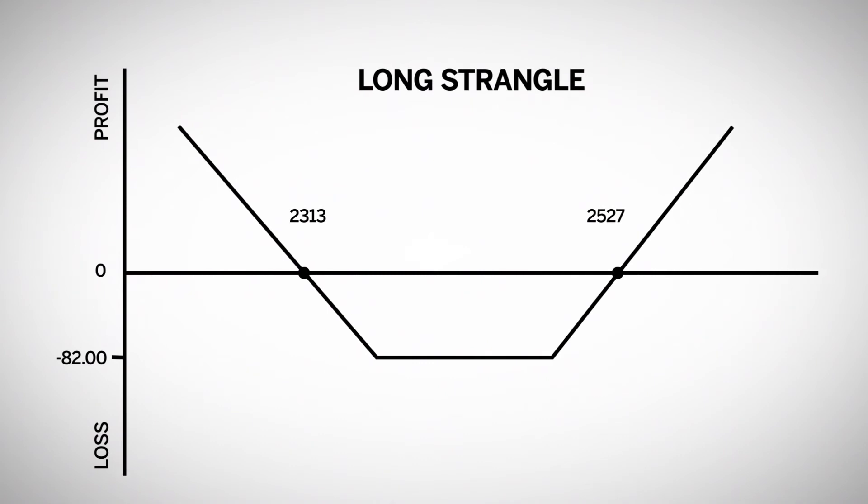For example, at expiration, the break-even points are 23.13 and 25.27. These are the call strike plus the strangle cost and the put strike minus the strangle cost.